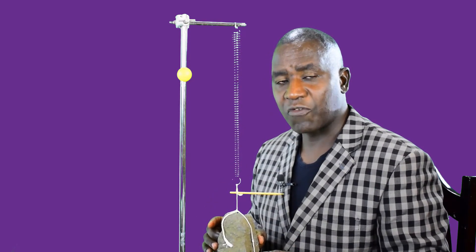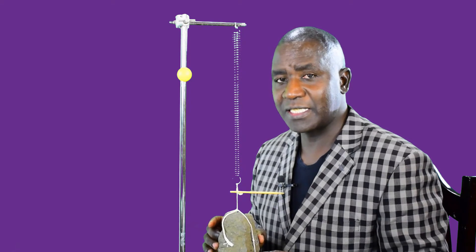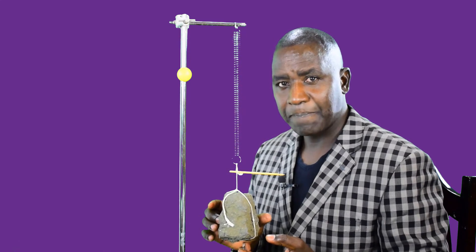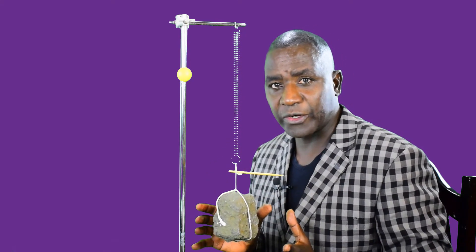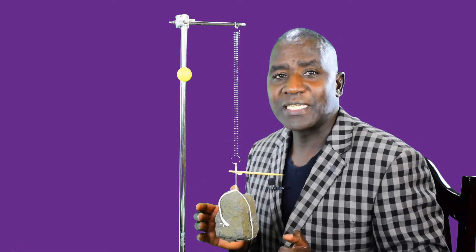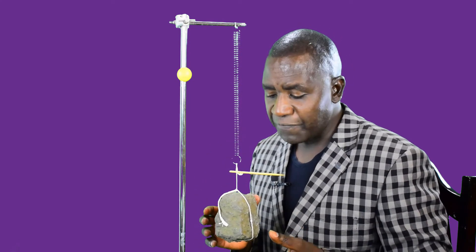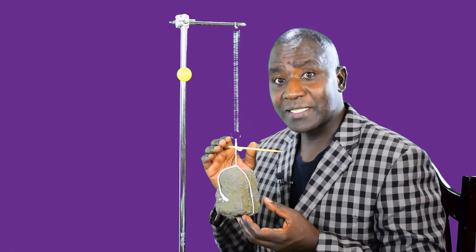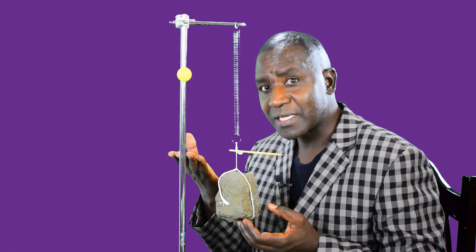So over there, displacement of minus 10 cm, distance 10 cm. And then it comes back to the starting point, where the displacement will be zero, but the distance will be 40 cm. If it continues and goes to the next position there, the distance will be 50 cm. Displacement, 10 cm.